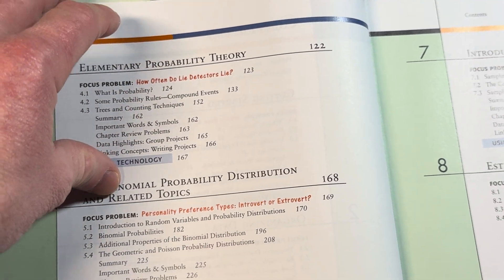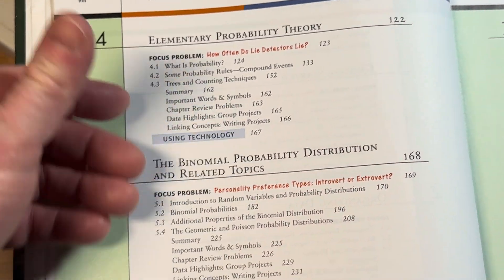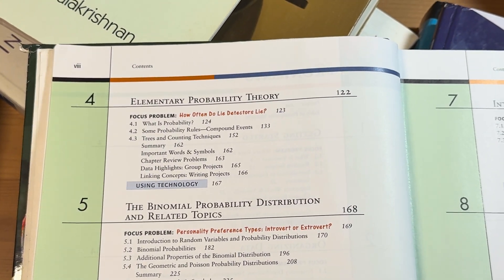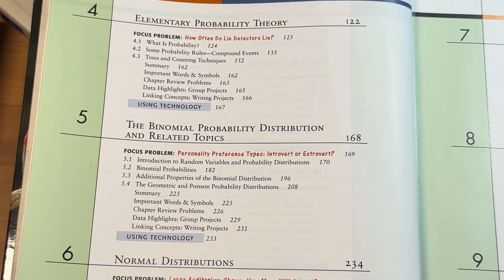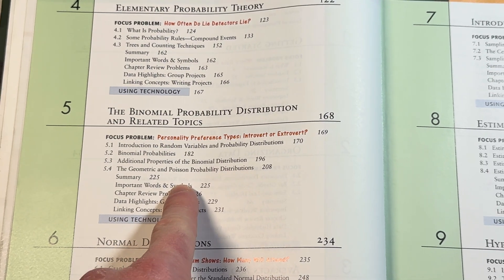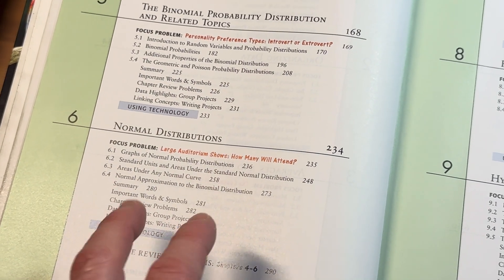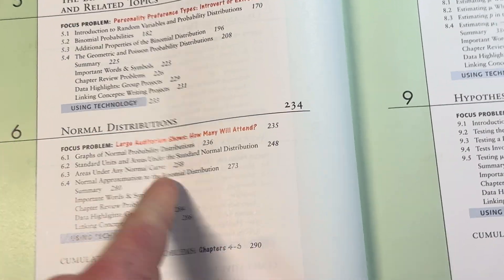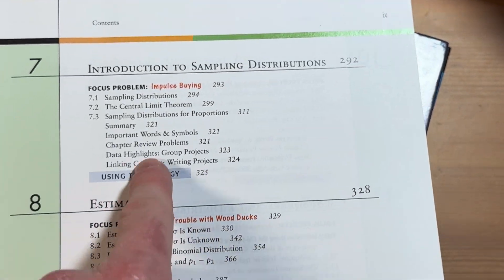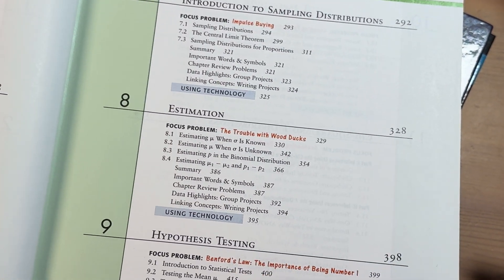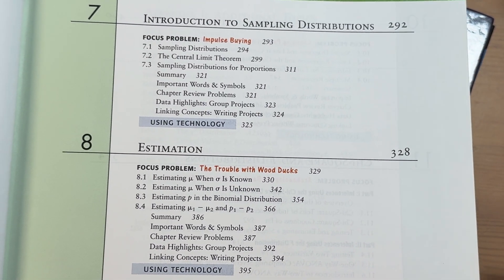When I've taught this, the first test would cover the first three chapters, and then the second test would typically cover some probability. So you've got elementary probability theory, the binomial probability distribution, and then normal distributions. Typically I would put chapters four and five on the second test. Normal distributions, introduction to sampling distributions — chapters six, seven, and eight — usually on a test as well, because this covers estimation, basically.